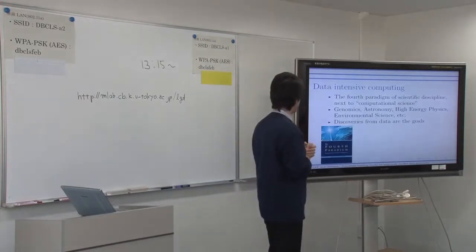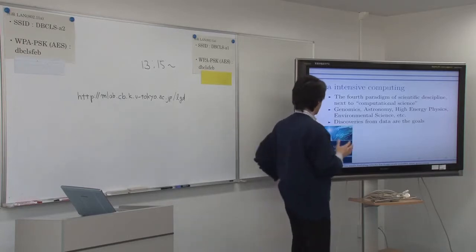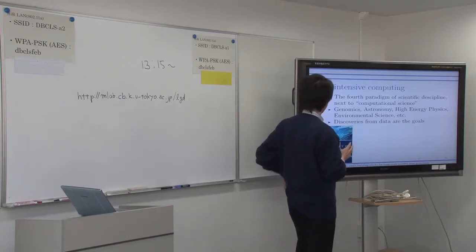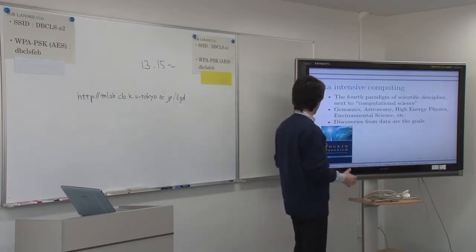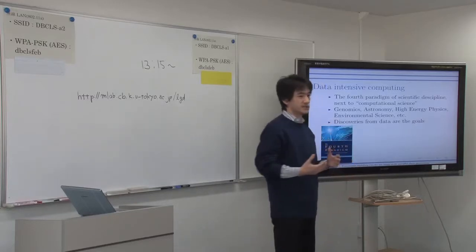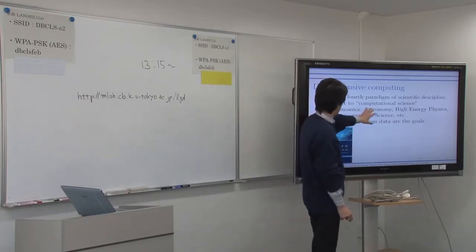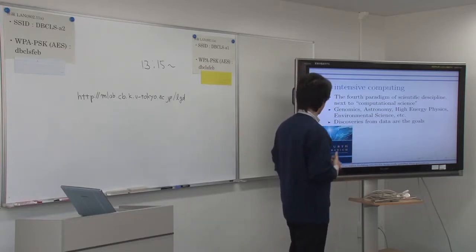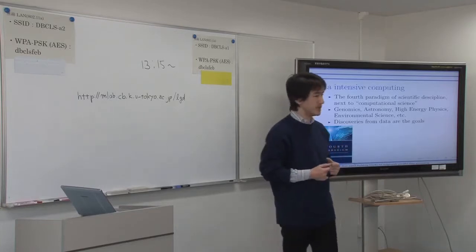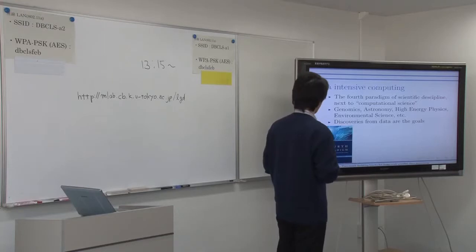I don't have much background in biology, but when we look at the entire field of science, it is not only biology and genomics in which scientists are sort of overwhelmed by loads of data. There are so many other scientific fields like astronomy, high energy physics, and environmental science, in which people are fighting with a lot of data generated by many sources.